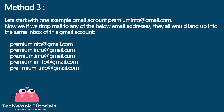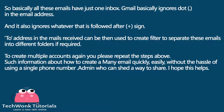Method 3. Let's start with one example Gmail account: premiuminfo@gmail.com. Now if we send mail to any of the below email addresses, they all land in the same inbox of this Gmail account — so basically all these emails have just one inbox. Gmail basically ignores dots in the email address, and it also ignores whatever follows a plus sign. The 'to' address in received mails can then be used to create filters to separate emails into different folders if required. To create multiple accounts, repeat the steps above.